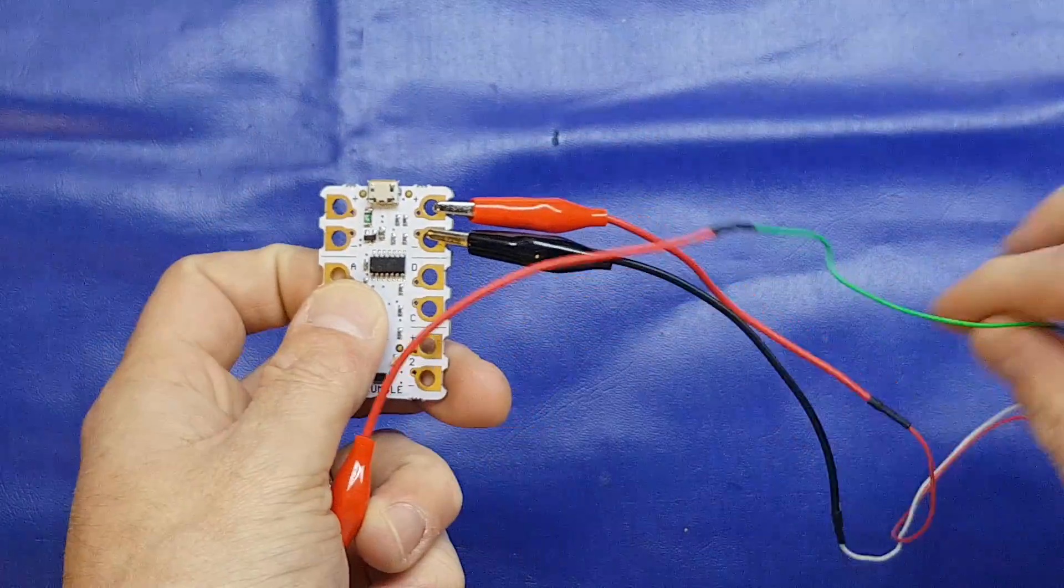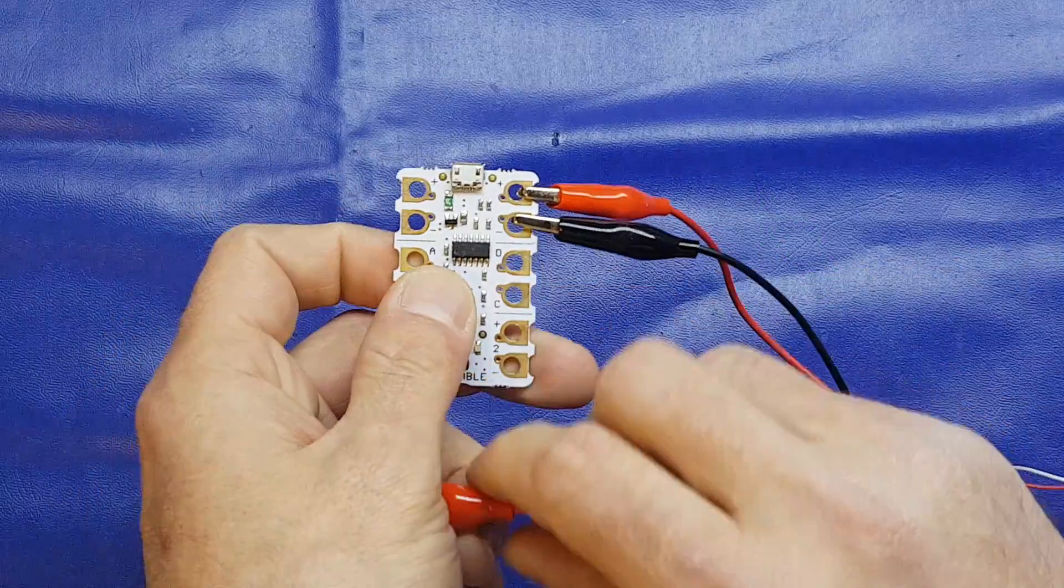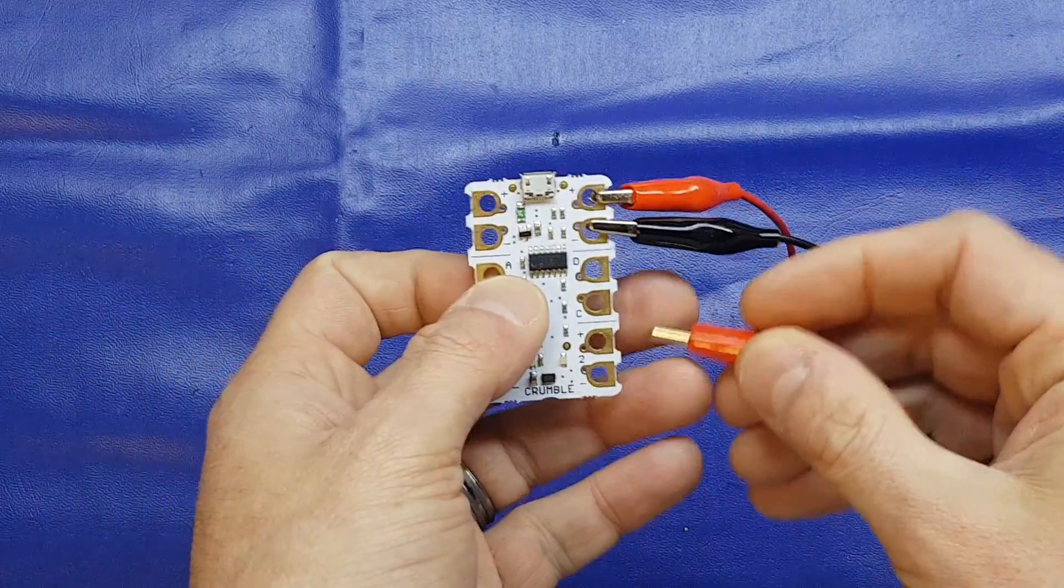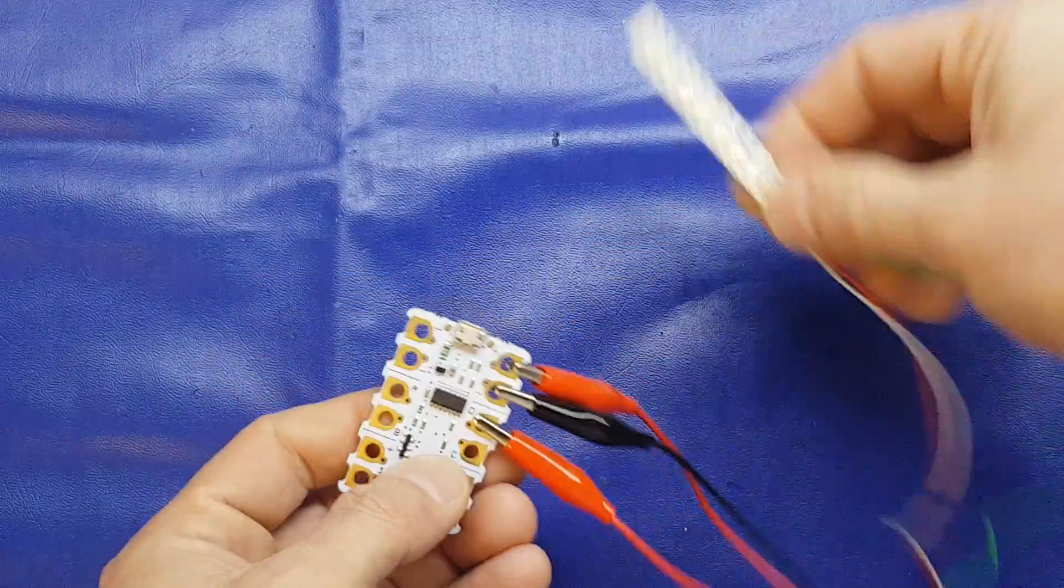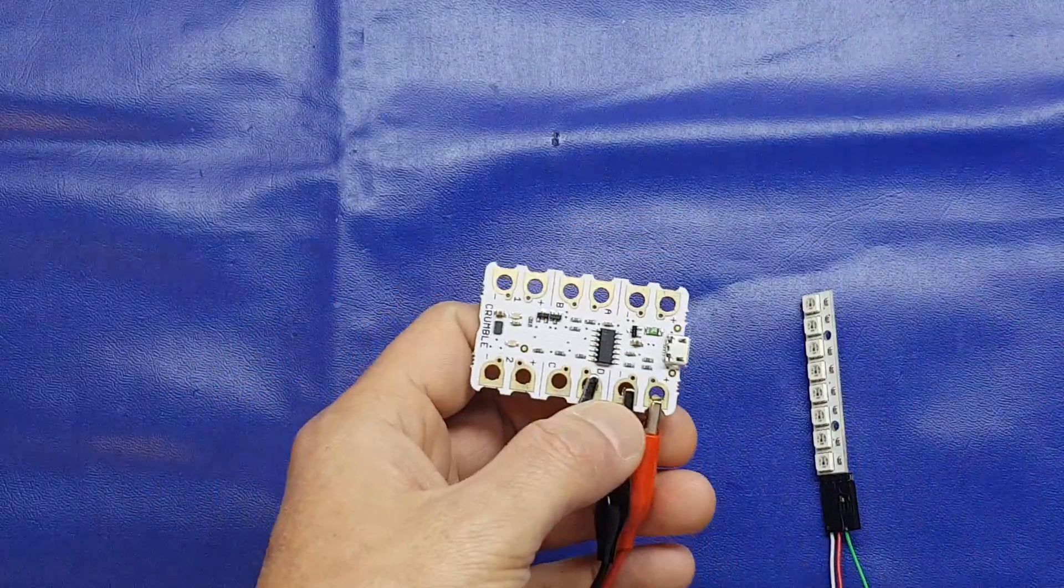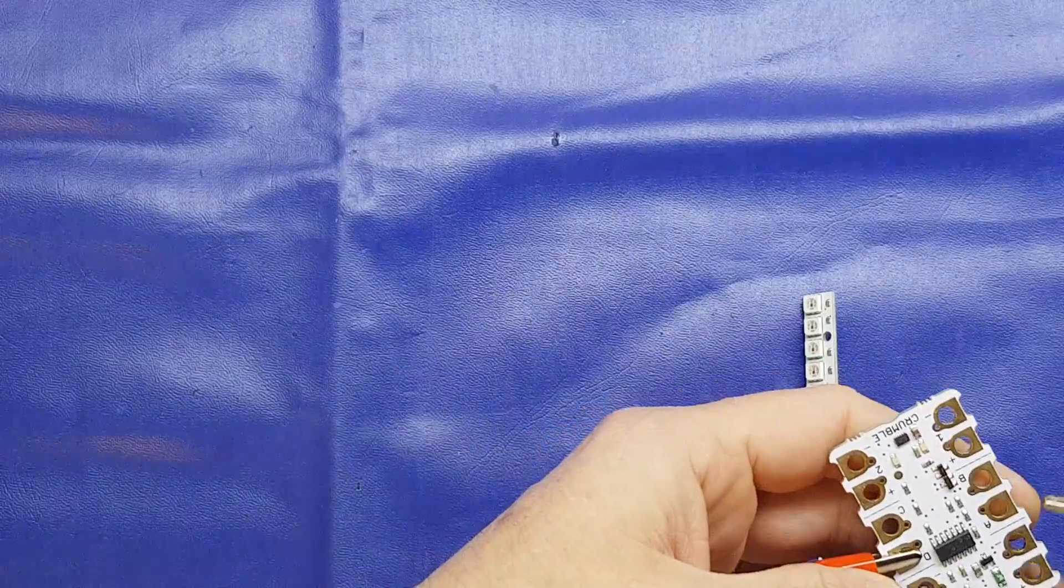This one here, as you can see on the green wire, is the data. So I'm just going to hook this up to point D on the board. And there we have it. And then simply attach 5V to the other side.